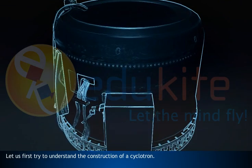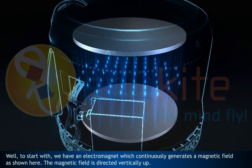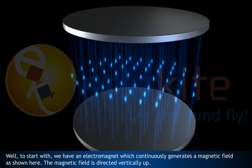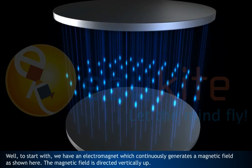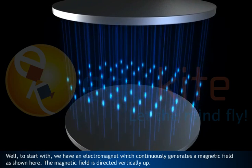Let us first try to understand what a cyclotron is made up of on a fundamental level. To start with, we have an electromagnet which continuously generates a magnetic field as shown here. Here, the magnetic field goes from the bottom to the top.